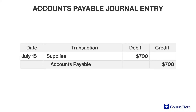Suppose that J Company purchases supplies on credit from Green Company on July 15th. Green Company invoices J Company for $700 and the payment is due on August 15th, which is 30 days later. The $700 becomes an account payable on J Company's balance sheet on July 15th. Because this account payable amount is due within 30 days, it is reported as a current liability on the balance sheet.